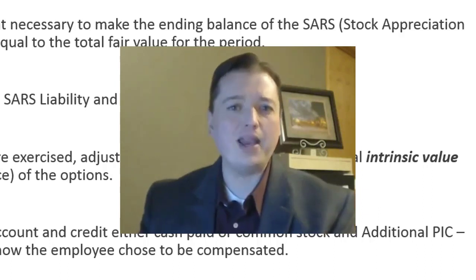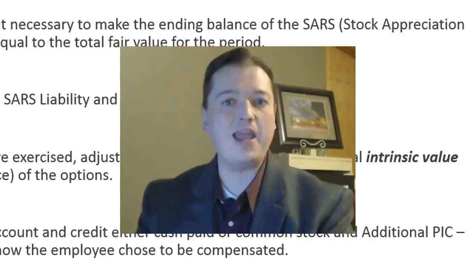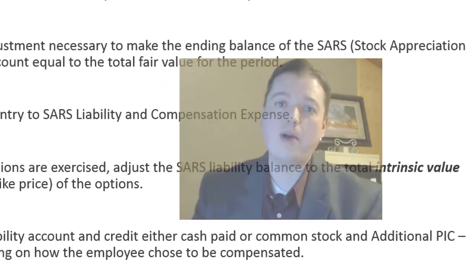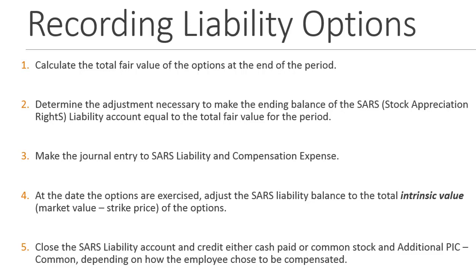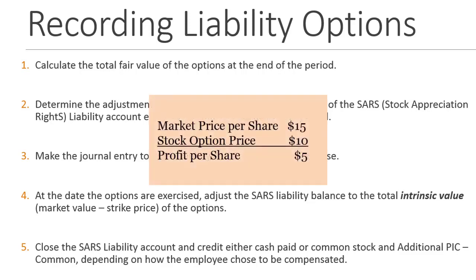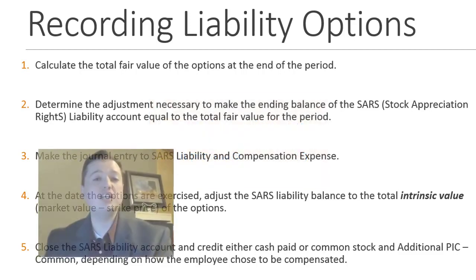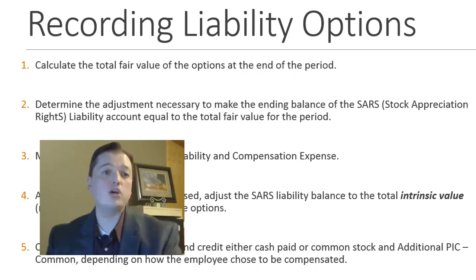We've had to limit ourselves a little bit, but we're having a lot of fun with the journal entries we get to make — and perhaps the most fun set are these liability options we're about to discuss. As a quick reminder, equity options are only used by the employee to buy shares of stock. You bring in the option, pay the strike price, get the share, and then either keep it to become an owner or sell it for the intrinsic value profit — say, buy at $10, sell at $15, and make $5.